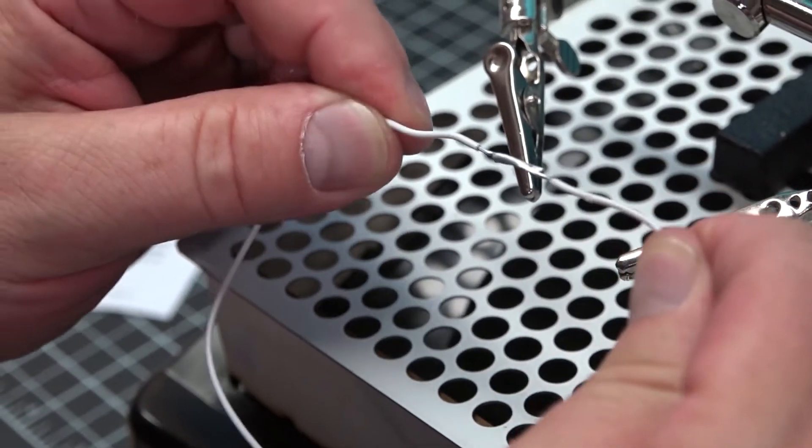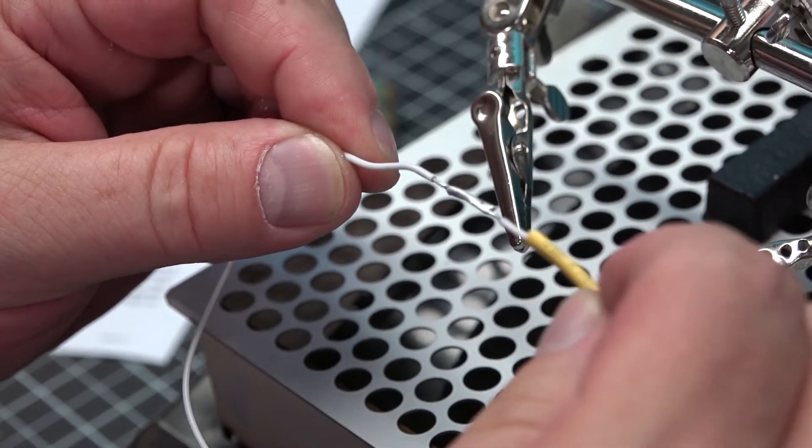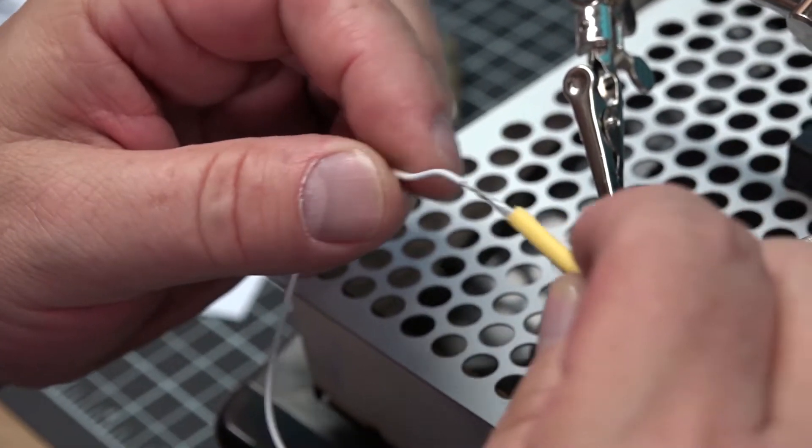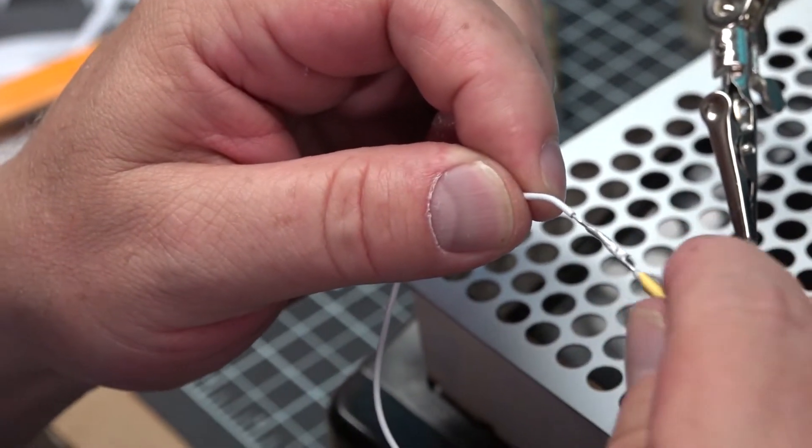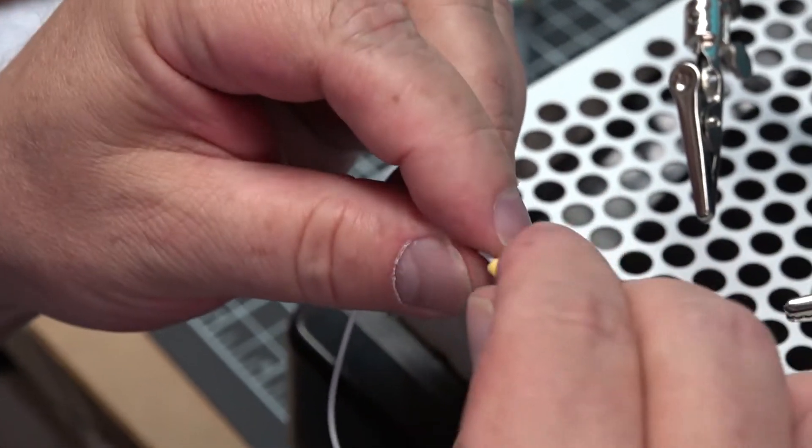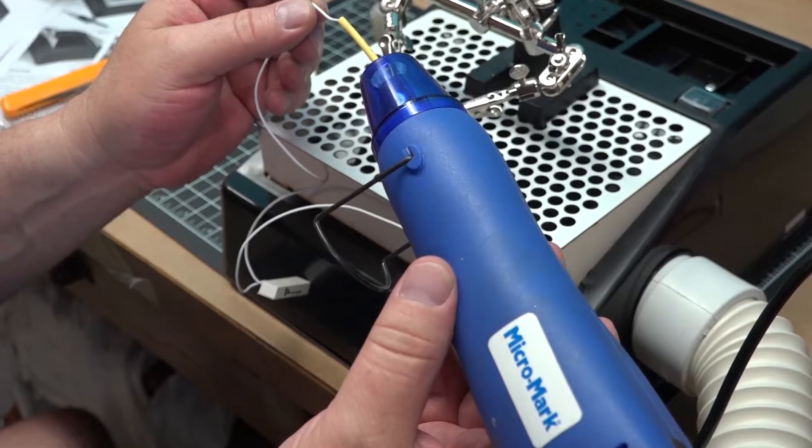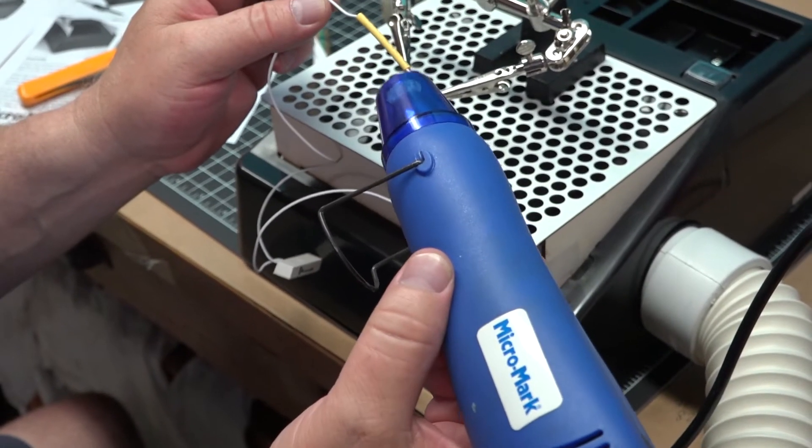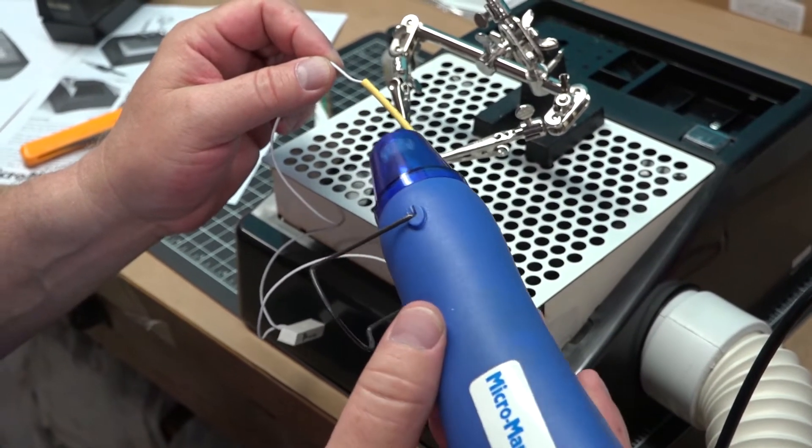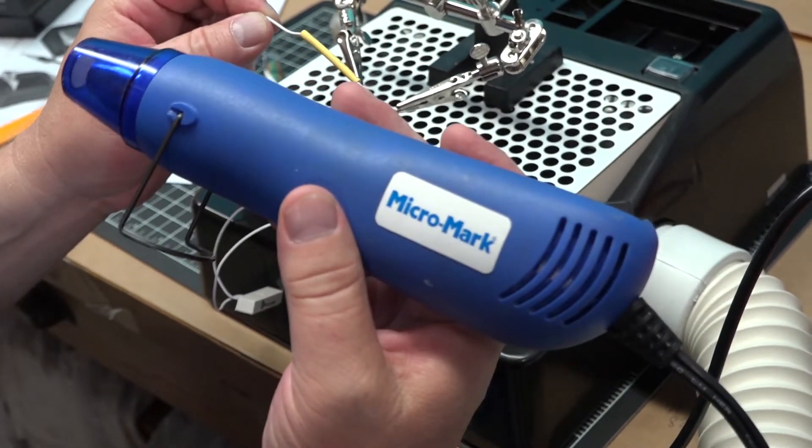Okay, our wire is now soldered together. You slip over your heat shrink tubing, and now at this point my heat shrink tubing has covered the connection. I'm going to take my Micromark heat gun.